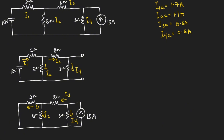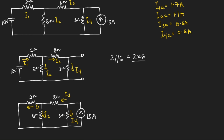To solve this, I'm going to reduce this connection. You can see that the 2 ohms and 6 ohms will be in parallel. So we have 2 parallel 6, which equals 2 times 6 divided by 2 plus 6, giving us a value of 1.5 ohms. This 1.5 ohms will be in series with the 8 ohms, so we have 1.5 plus 8 ohms, which equals 9.5 ohms.